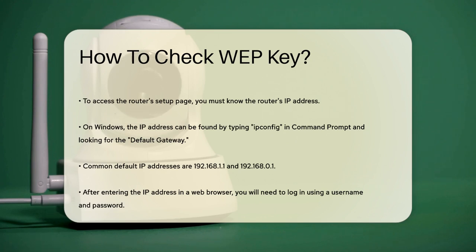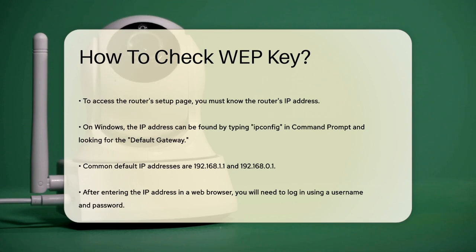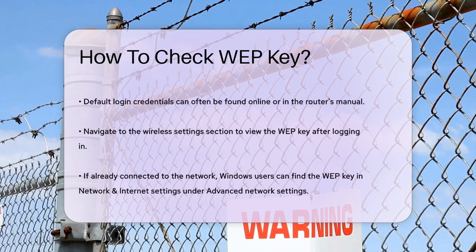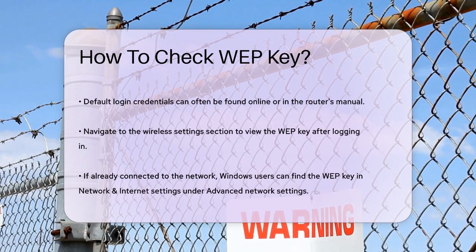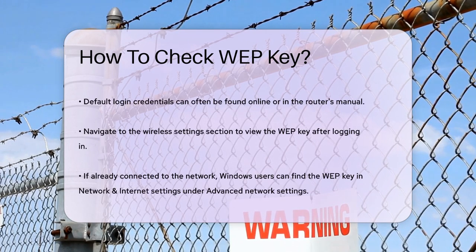Once you have the IP address, type it into your web browser's address bar and press Enter. You'll be prompted to enter a username and password. If you don't know these, you can often find the default credentials online or in your router's manual. After logging in, navigate to the Wireless Settings section, usually labeled as Wireless or Wireless Security. Here, you should see your WEP key listed.